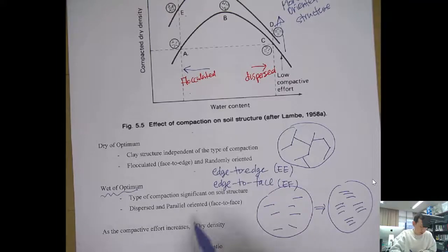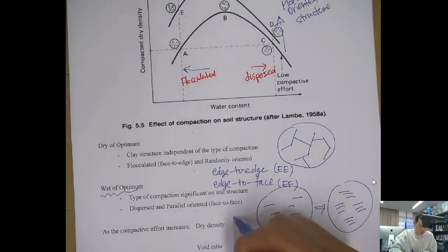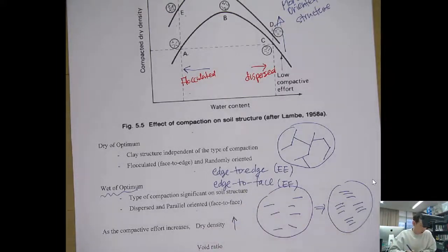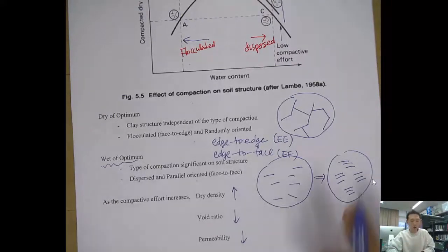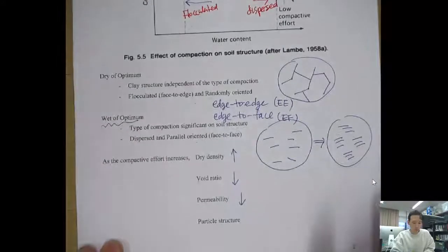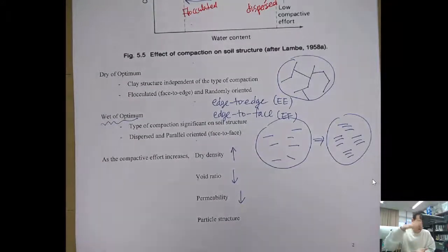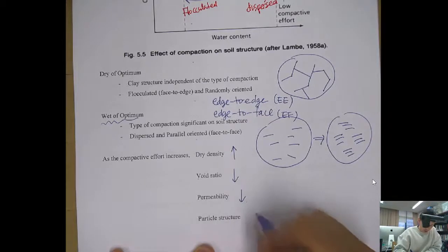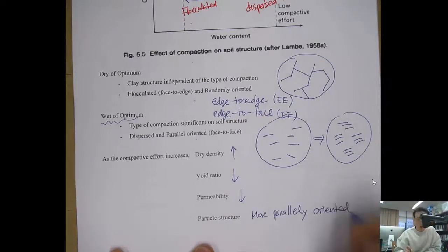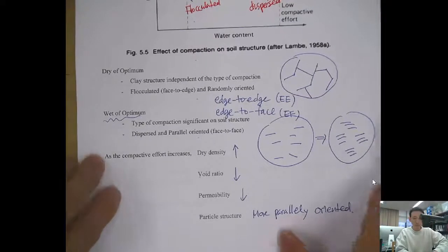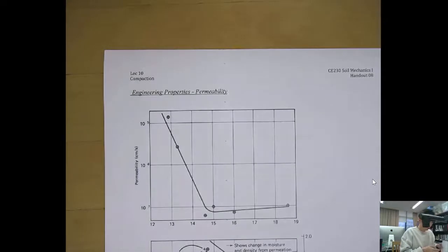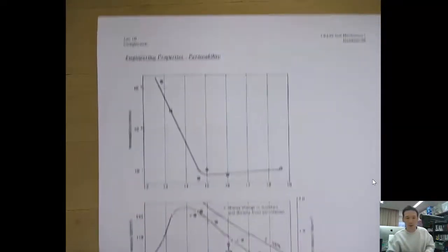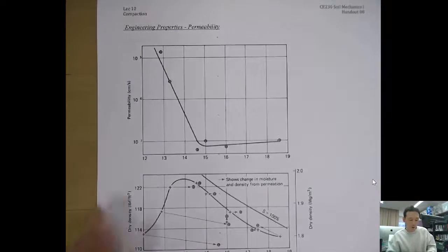As compaction effort increases, dry density increases and void ratio decreases. Because void ratio is now small, you have small pores, so permeability decreases. The particle structure becomes more parallel and more oriented. So let's look at the effect on engineering properties of fine grain soil — starting with permeability.